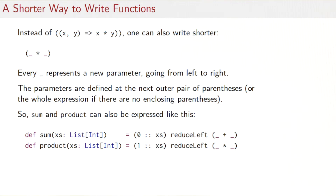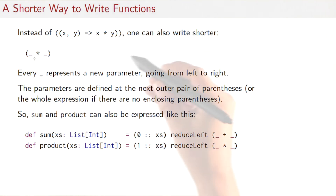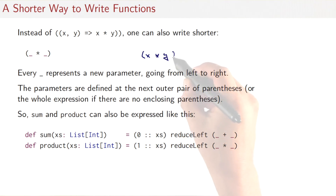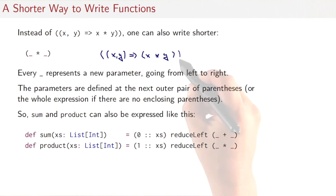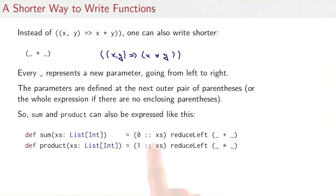The idea is that every underscore represents a function parameter, so if you have several ones then each one represents a new parameter going from left to right. The parameters are implicitly defined at the next outer pair of parentheses. So sum and product can in fact be expressed even shorter: sum would be zero followed by xs reduceLeft with the binary operation plus, and product would reduceLeft with a binary operation times.